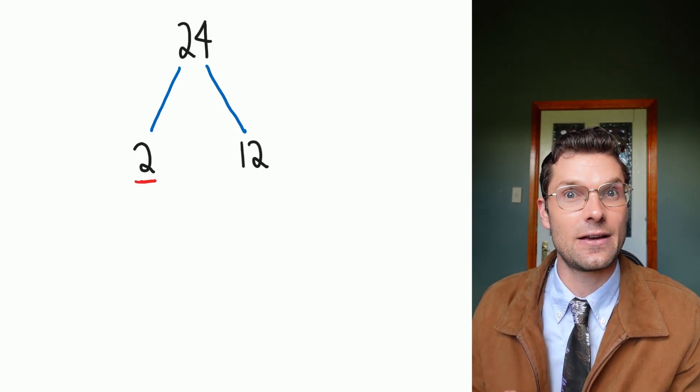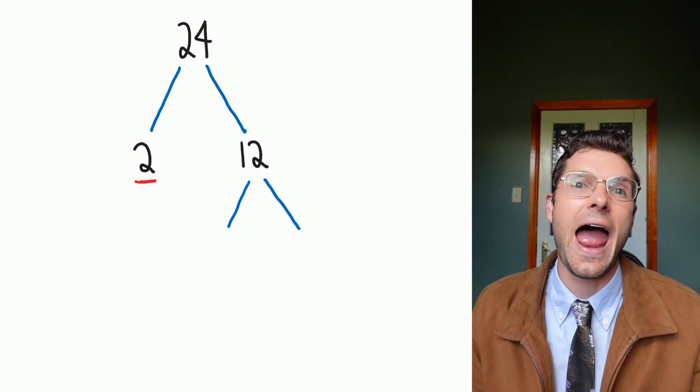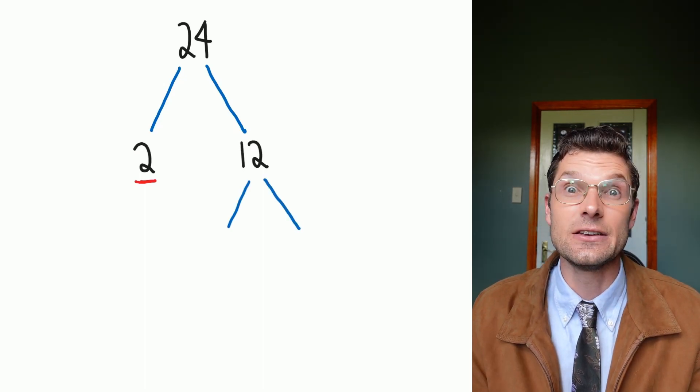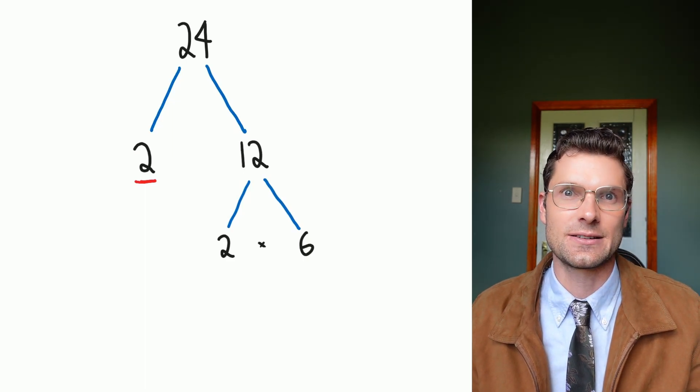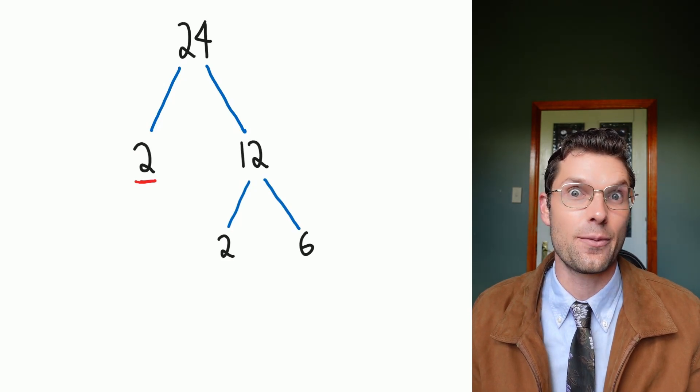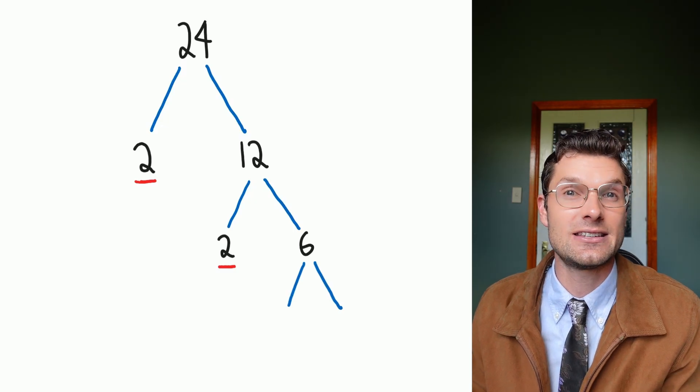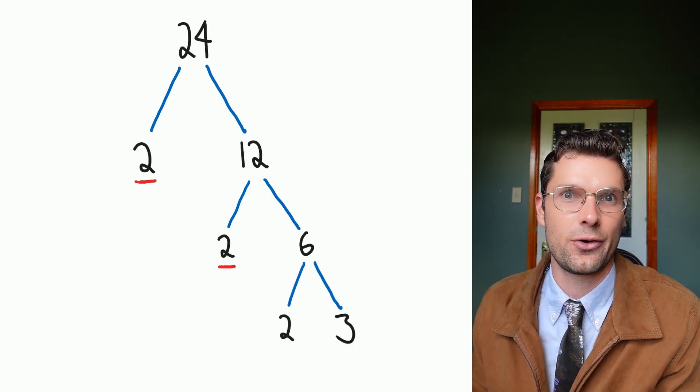Now I've got to do the exact same thing for the 12. I've got to draw two branches from it and write down another factor pair. This one I'm going to do 2 times 6. You don't need that times there. Underneath the 2, that's another prime factor, so we're stopping here. We can't break it down anymore. And then I have to break the 6 down into 2 times 3.